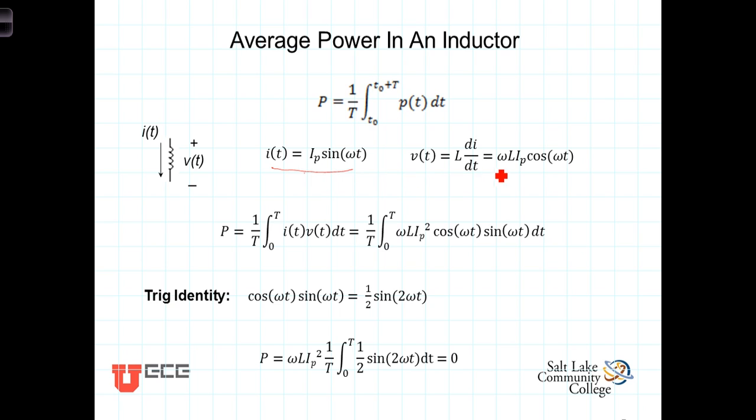The current times the voltage, then, is equal to, and it's this term right here that we're going to be integrating, the instantaneous power, p of t, is equal to omega l i sub p squared times the cosine times the sine.